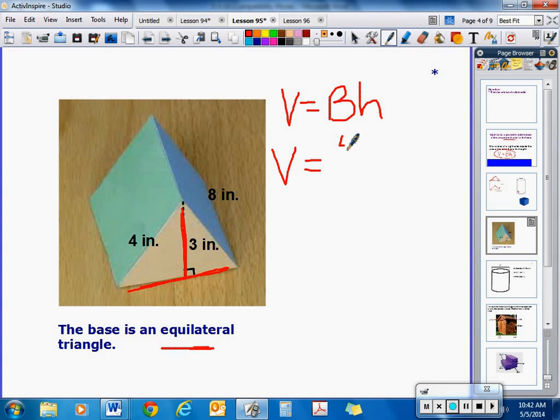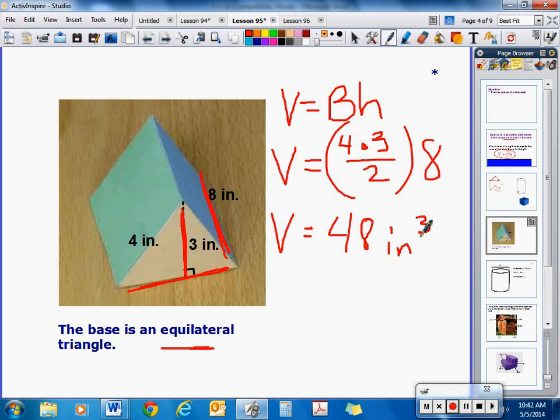So you have 4 is the base, because it was an equilateral triangle, times 3, which is the height, divided by 2. And we have to take that times the height of the prism, which is 8. So we have the area of the base would be 4 times 3, divided by 2, which is 6. 6 times 8 is 48. And we are finding volume, so that would be cubic inches.